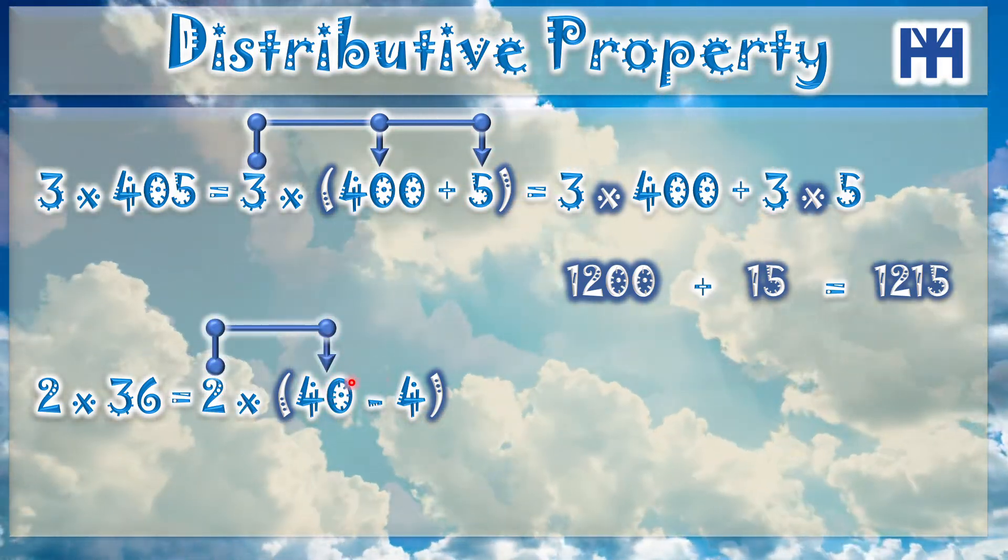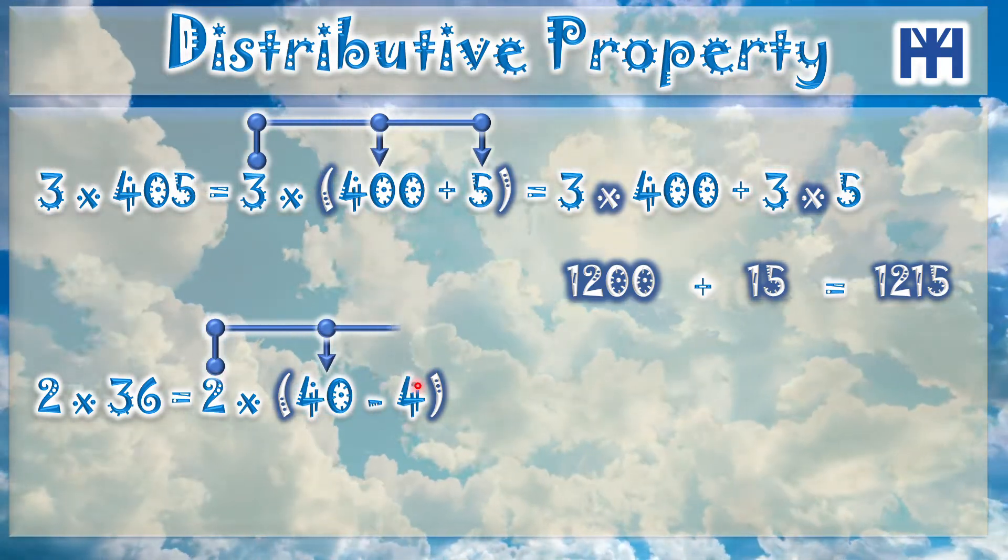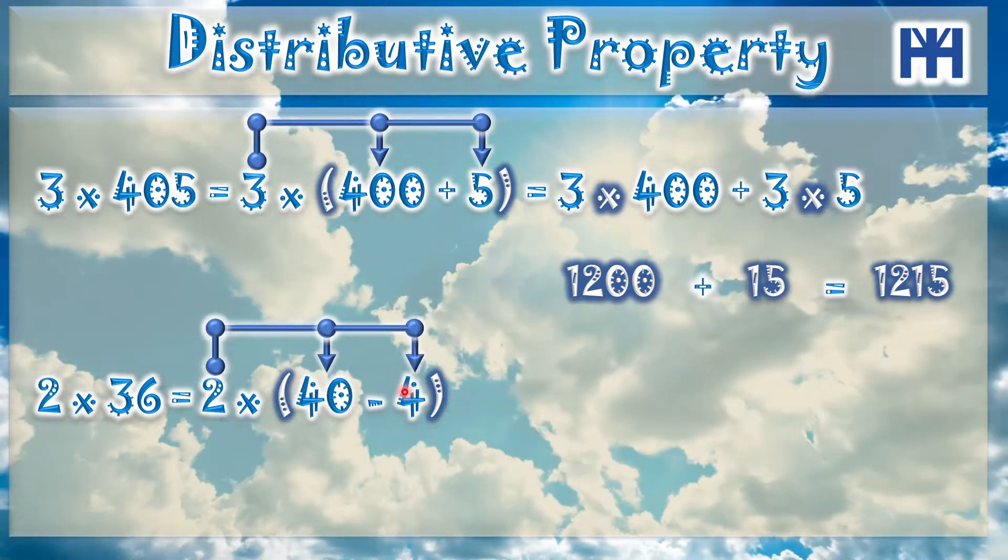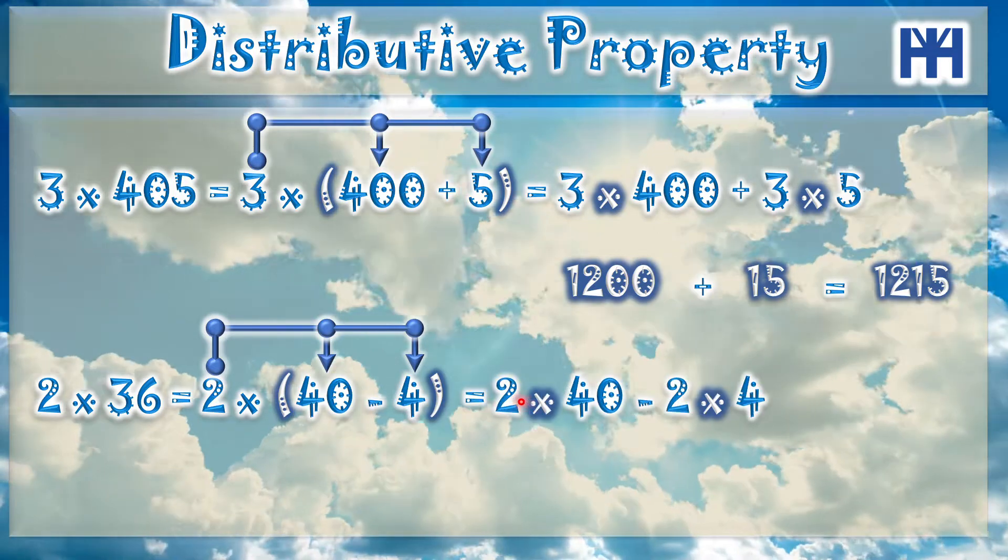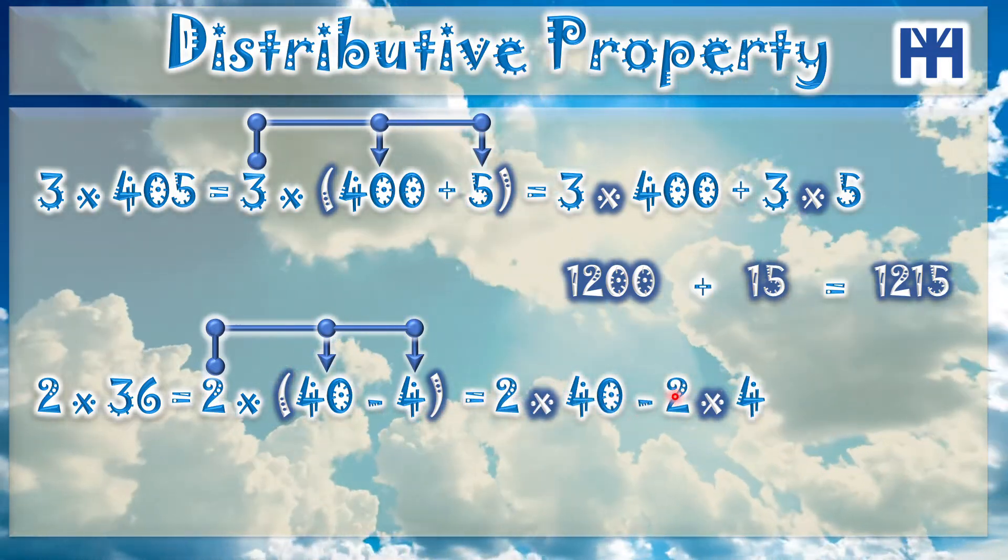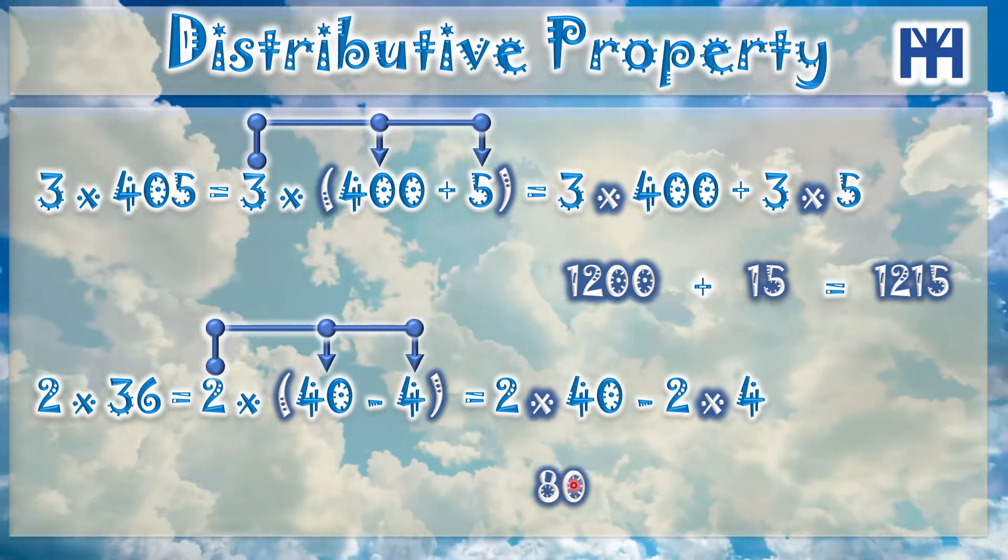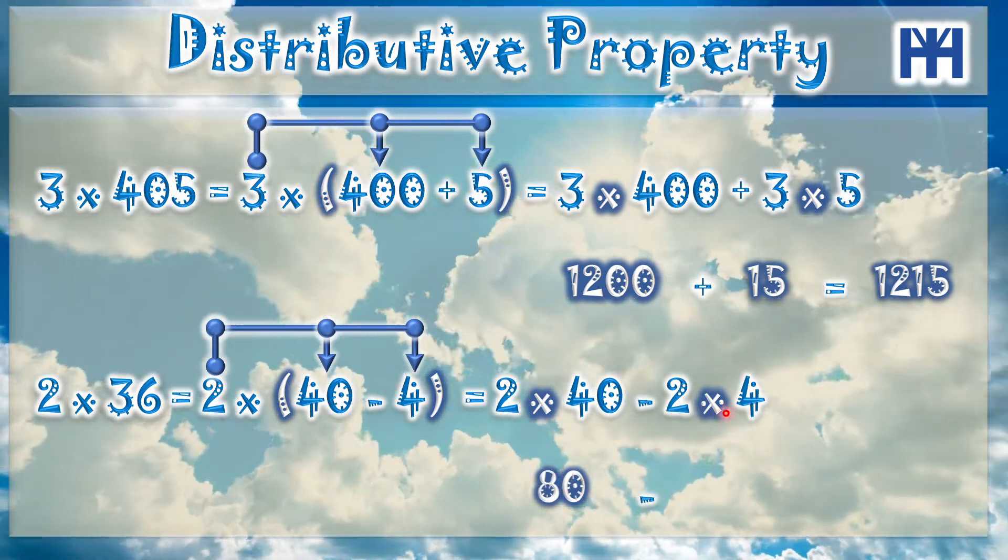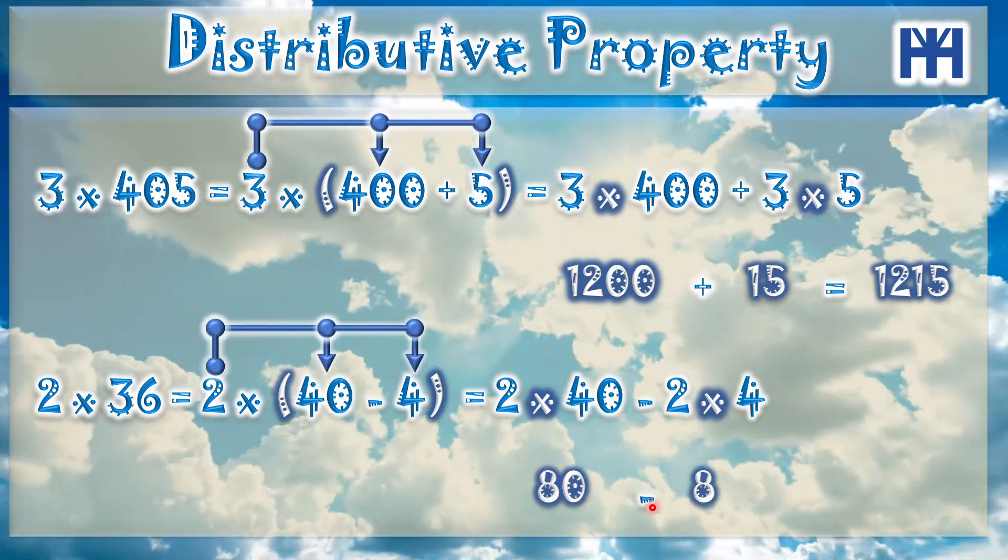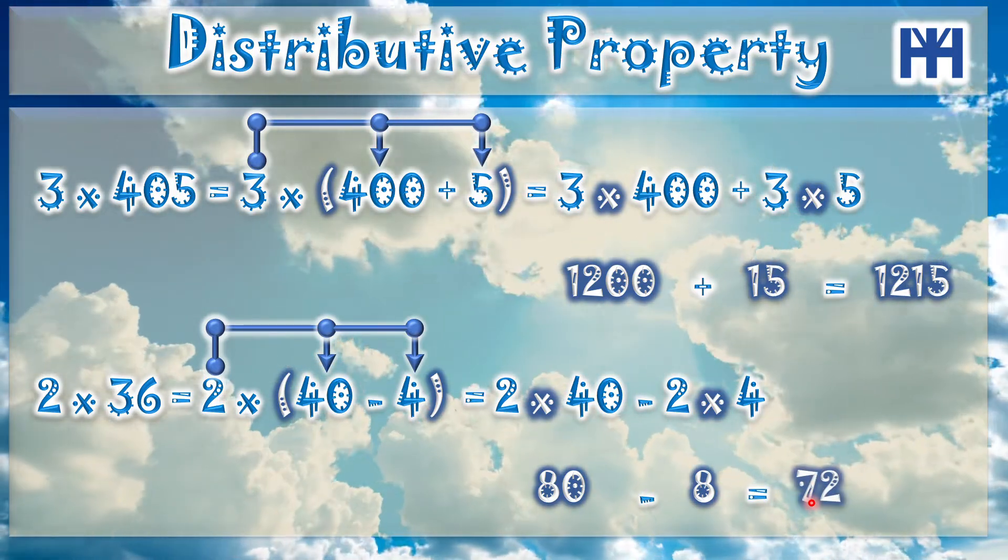So it's 2 multiply 40 minus 2 multiply 4. So 2 multiply 40 is 80 minus 2 multiply 4 is 8. So 80 minus 8 is 72.